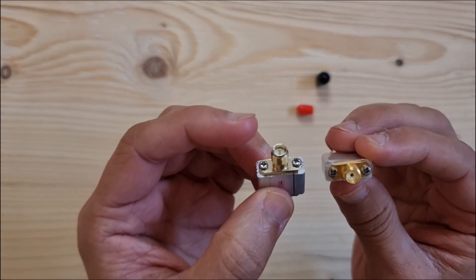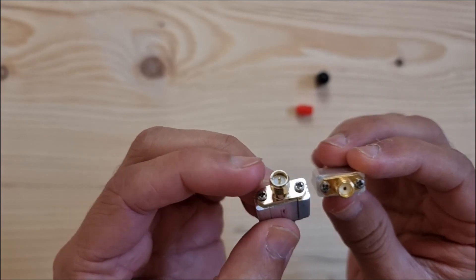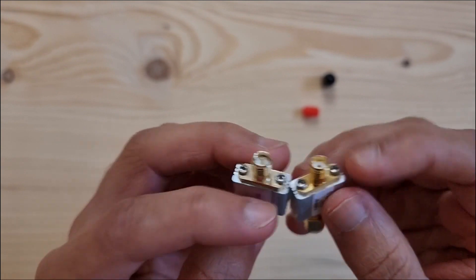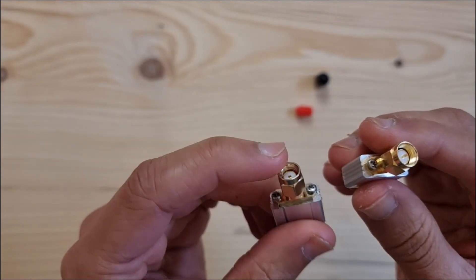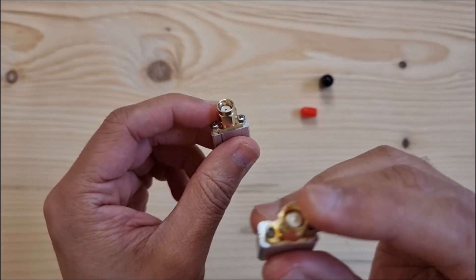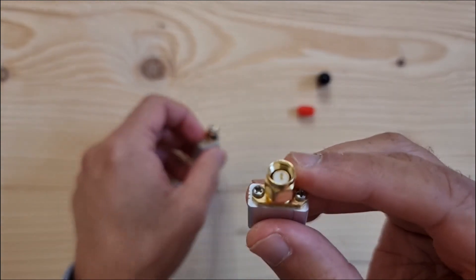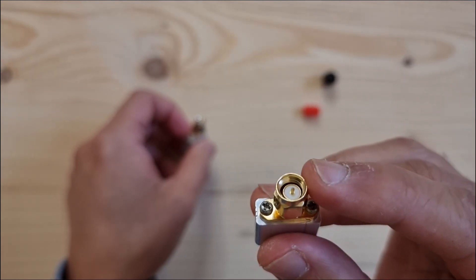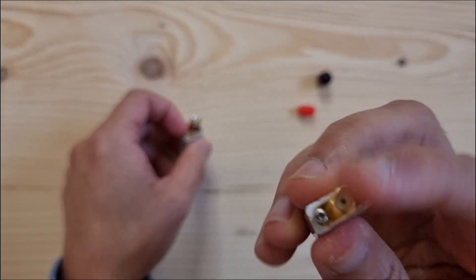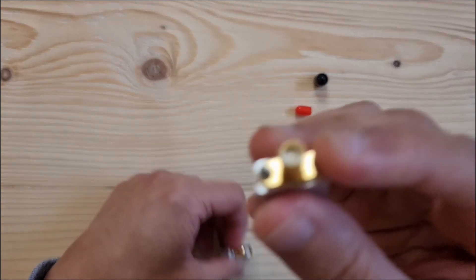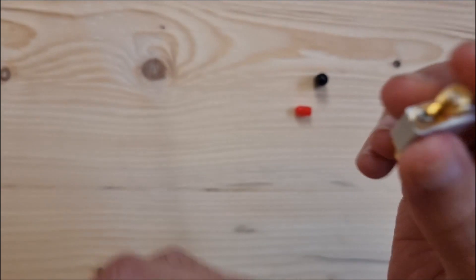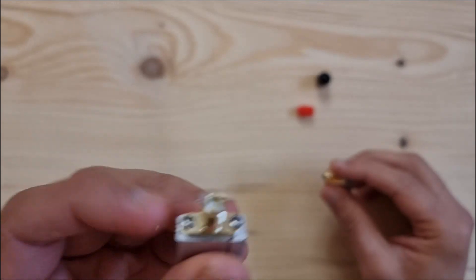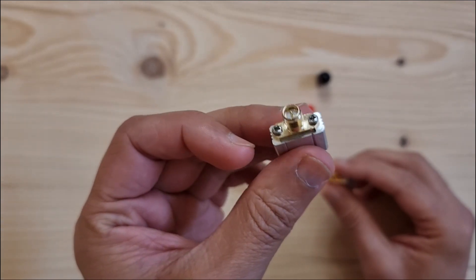So the COTX one has a pin and the AliExpress one has a hole and then on the other side the COTX one has a hole and the AliExpress one has a pin. So this is SMA male, SMA female and this one is RP SMA male, RP SMA female.